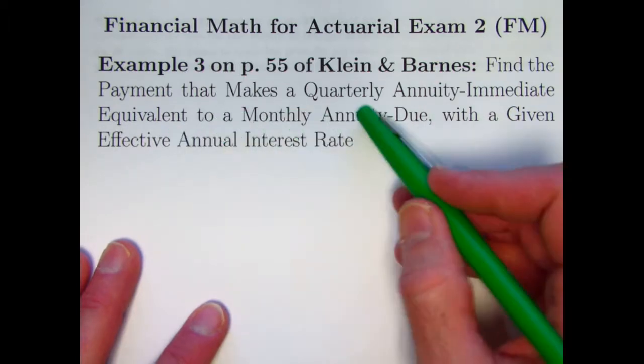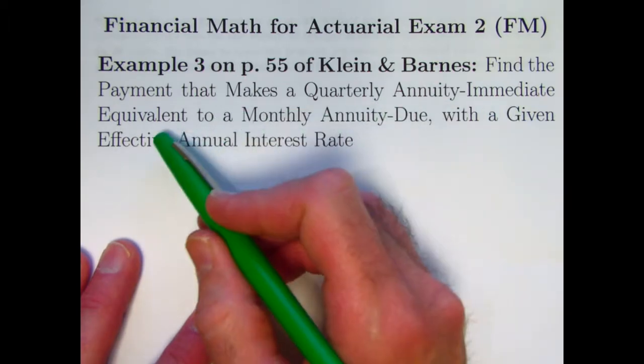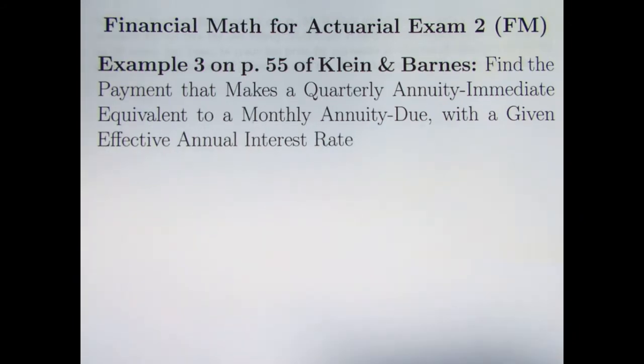This is example three on page 55 of that book. Find the payment that makes a quarterly annuity immediate equivalent to a monthly annuity due with a given effective annual interest rate that applies to both situations. And this is going to be kind of a long video. I'm going to solve the problem in a couple ways.